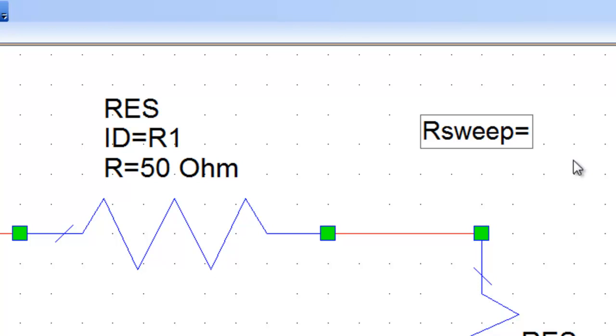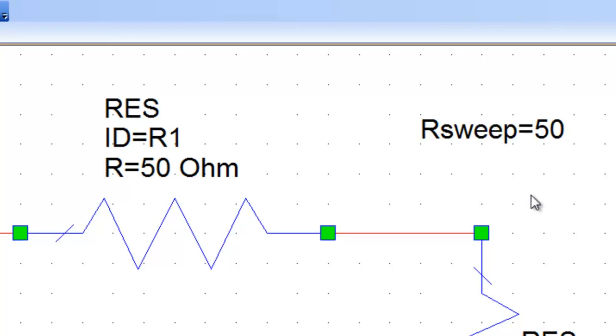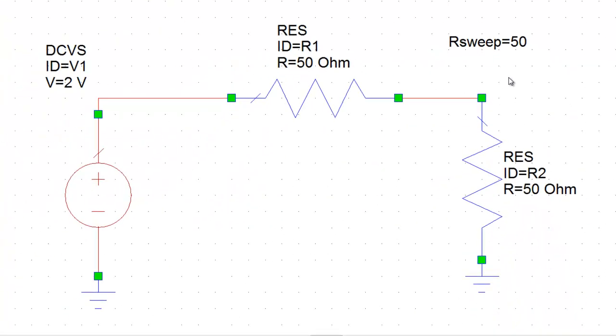This value obviously has to be assigned but it is just fictitious in a way if you are then sweeping the variable across a range. It doesn't really matter what you set it to. So we've declared RSweep and we've made it 50 ohms as a default value.